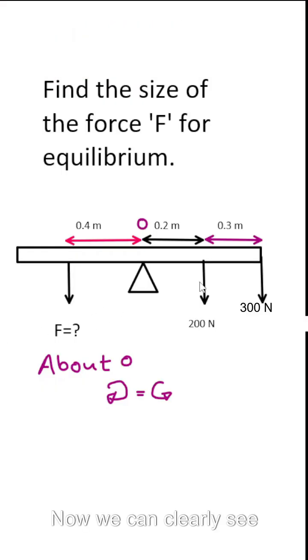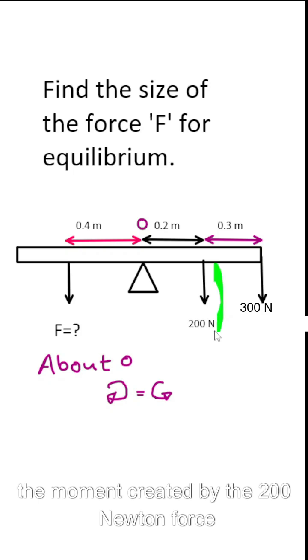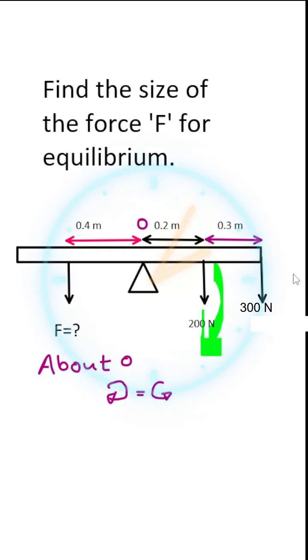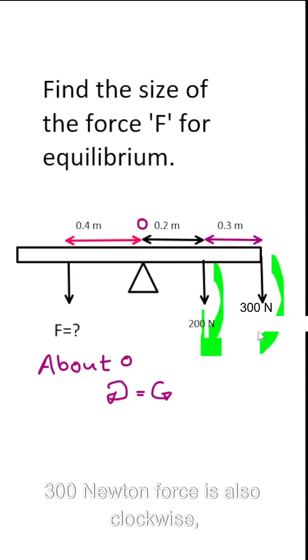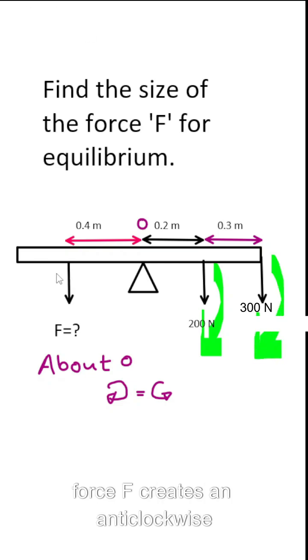Now we can clearly see the moment created by the 200 newton force is clockwise. The 300 newton force is also clockwise but force F creates an anticlockwise moment.